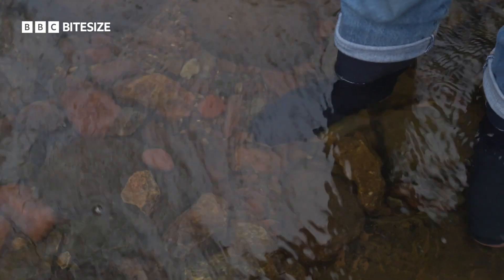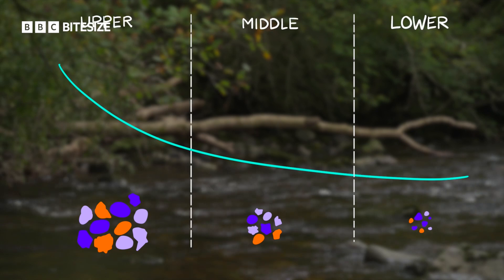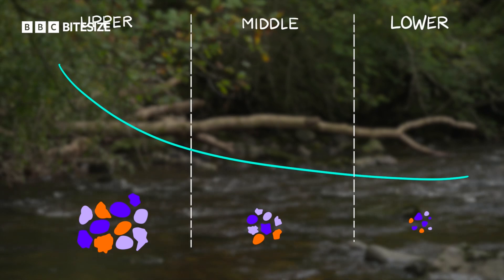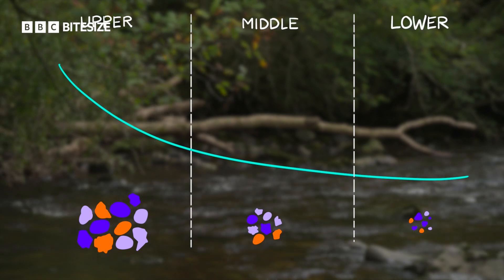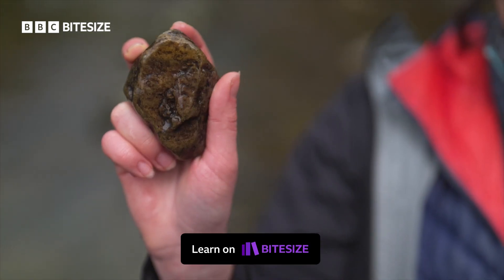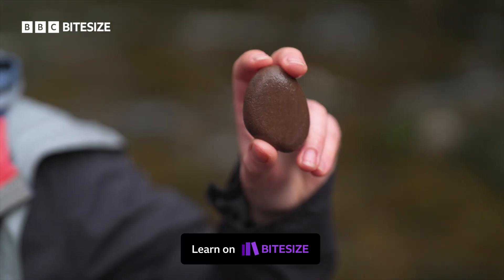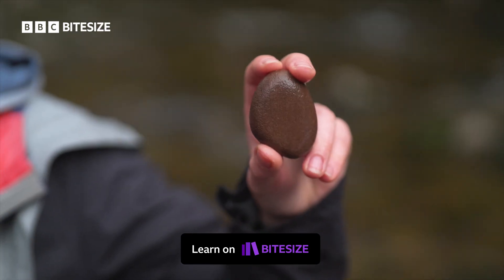Bed load is the material at the base of the river. Our model indicates that we're more likely to find bigger, more angular rocks near the upper course and smaller, rounder material in the lower course.